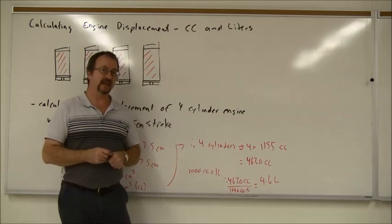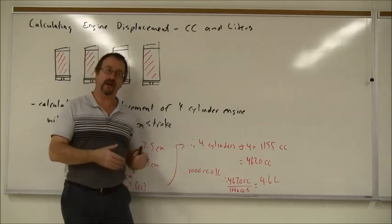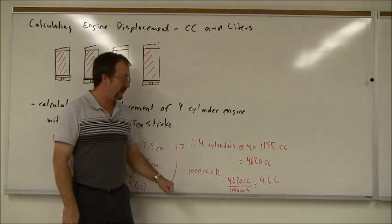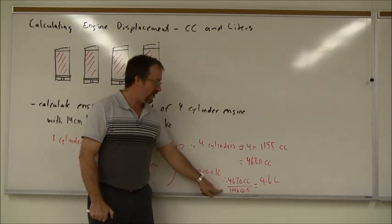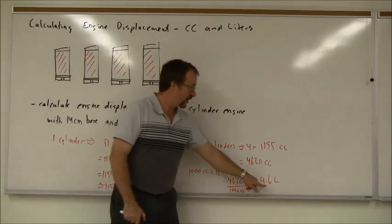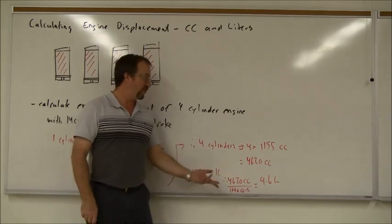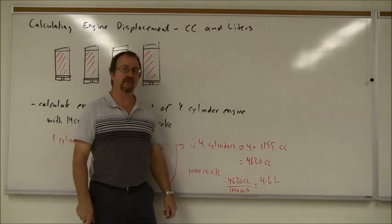But I've got to convert that into liters because, well, that's what this is about. There's a thousand cubic centimeters in one liter. So I take my cc's, 4620, divide it by a thousand cc's per liter. It gives me 4.6 liters. 4.62 actually, but we can round that to 4.6.